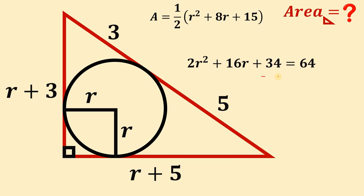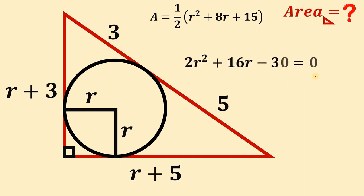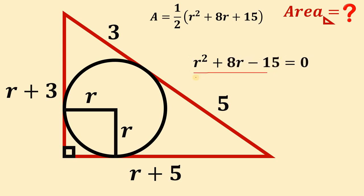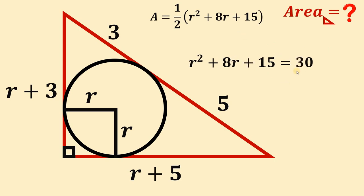Let's equate to zero by subtracting 64 from both sides, giving 2R squared plus 16R minus 30 equals 0. Since all coefficients are multiples of 2, dividing through by 2 gives R squared plus 8R minus 15 equals 0. This is close to the expression we want. The only difference is we need positive 15 instead of negative 15, so adding 30 to both sides gives us R squared plus 8R plus 15 equals 30.